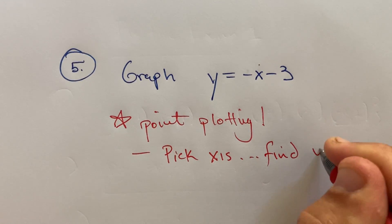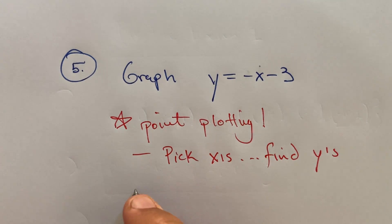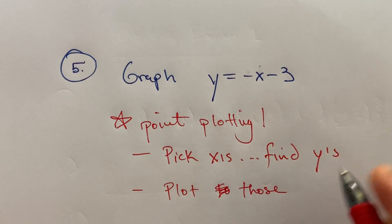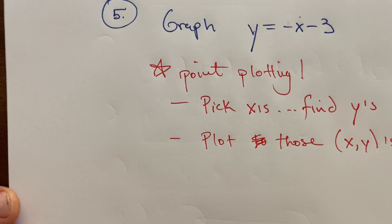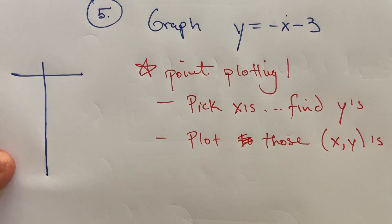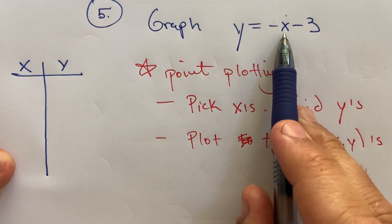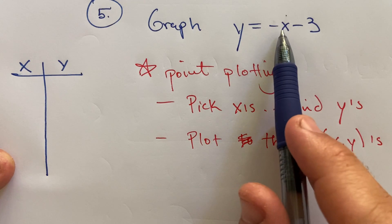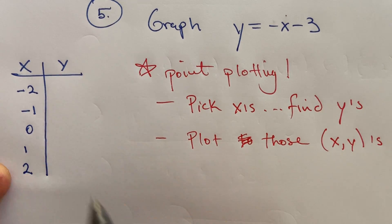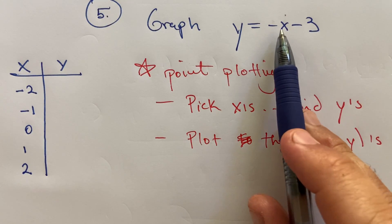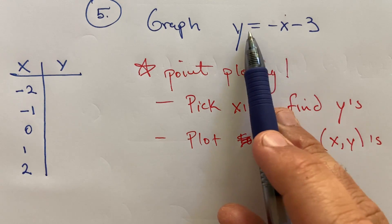And then plot those x and y pairs, and you're graphing if you do that enough times, then you're just building the graph of that. So what I mean is form a table, x y. I'm going to pick x's that are allowed to be picked. I can pick any x I want in this case, so I'll just pick like negative two, negative one, zero, and one and two, something simple.